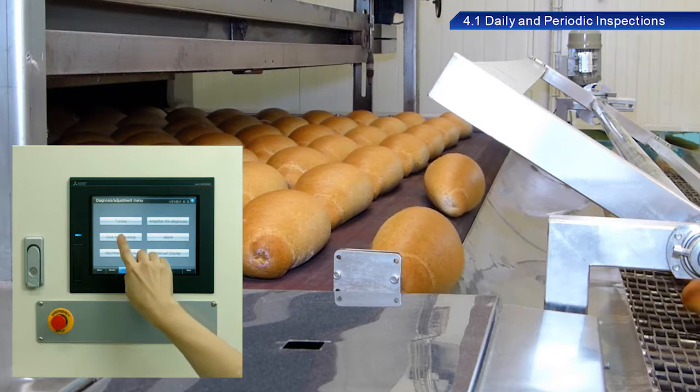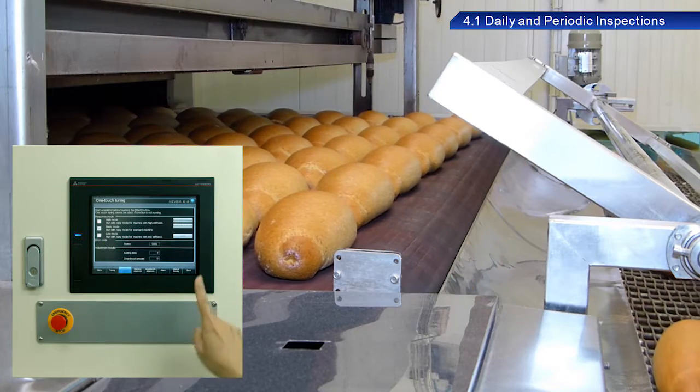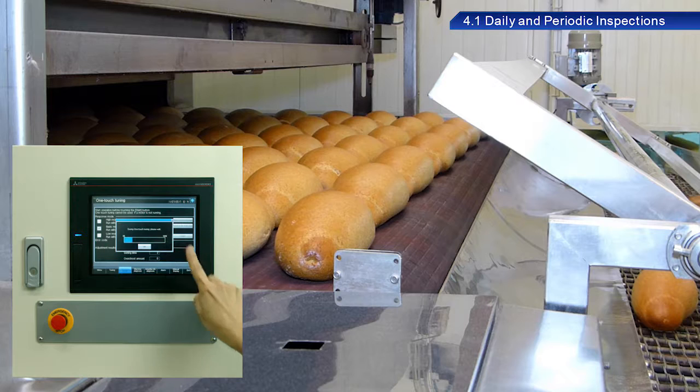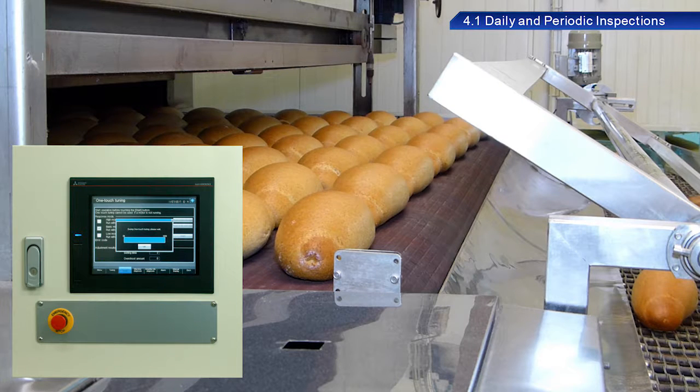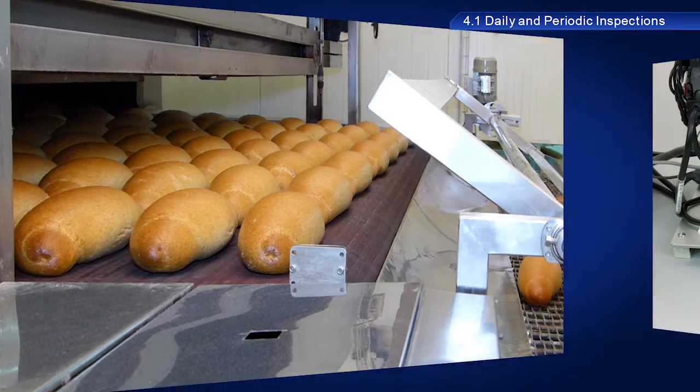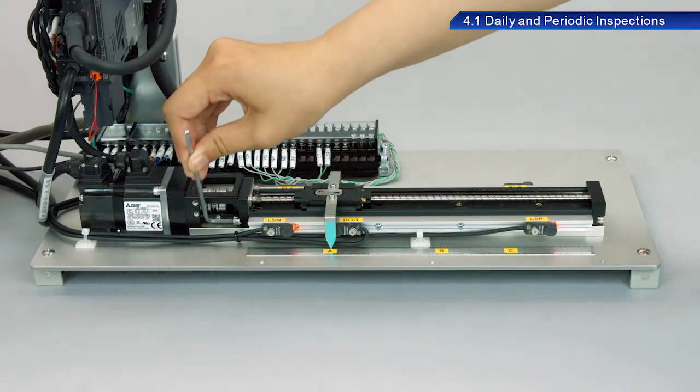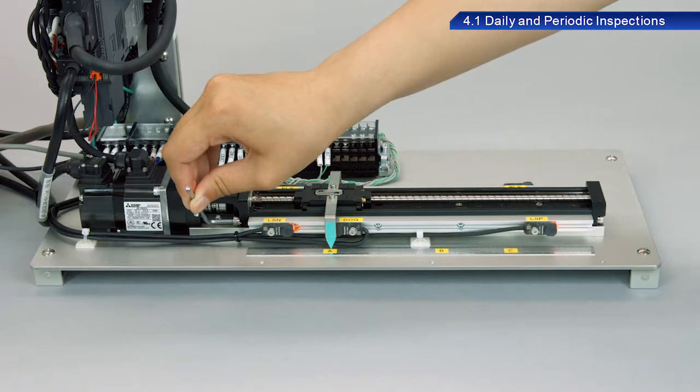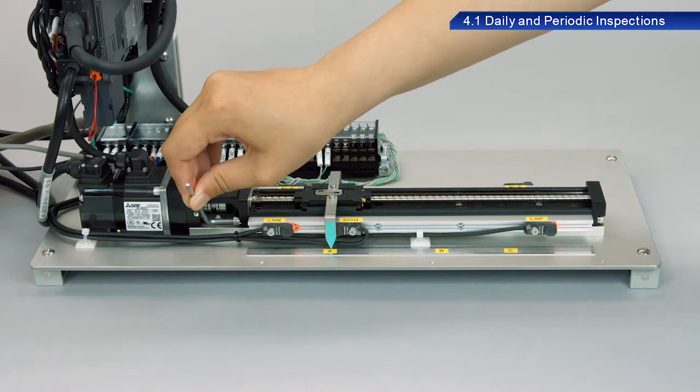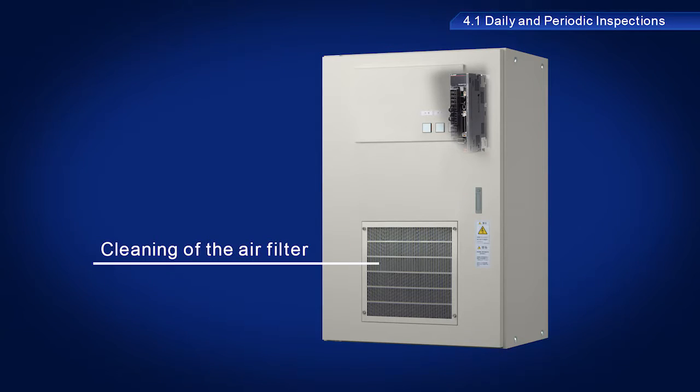Periodic inspections are used to stop equipment and perform checks not possible while operating. Screws, bolts, and other fittings may loosen due to vibration or temperature changes. Fittings should be checked during periodic inspections to ensure they are tightened properly. The air filter should also be cleaned as part of these inspections.